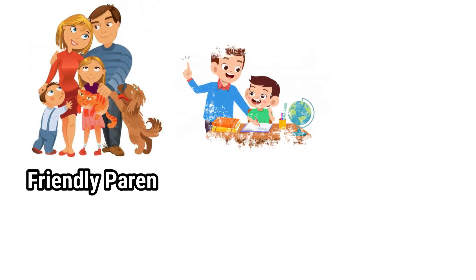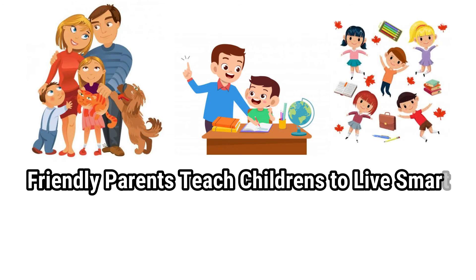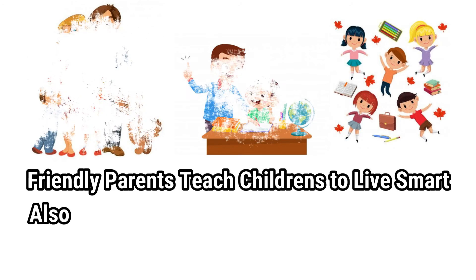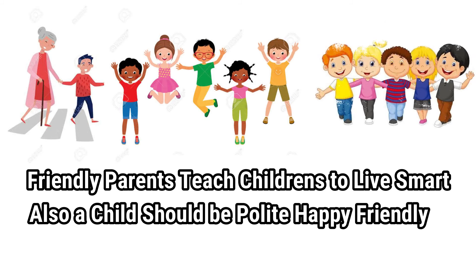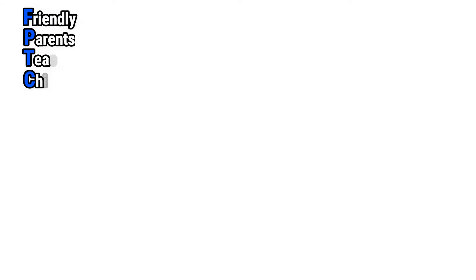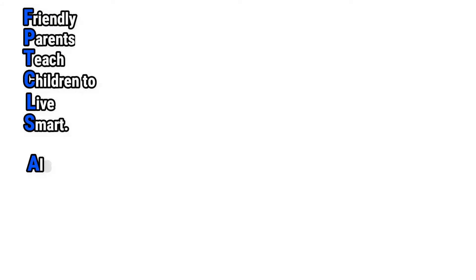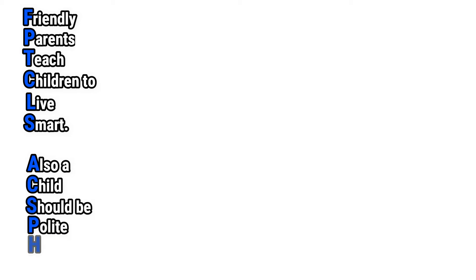Now we will learn a mnemonic to easily remember these 13 clotting factors. The mnemonic is: 'Friendly Parents Teach Children To Live Smart; Also A Child Should Be Polite Happy Friendly.' As mentioned, this covers all 13 factors.